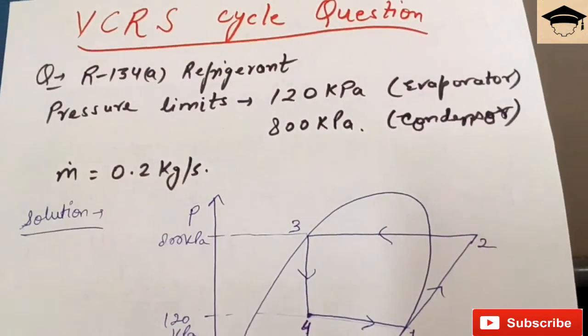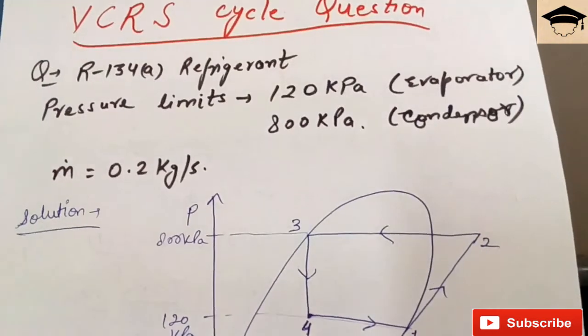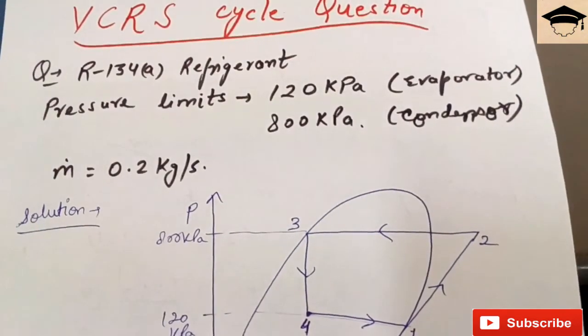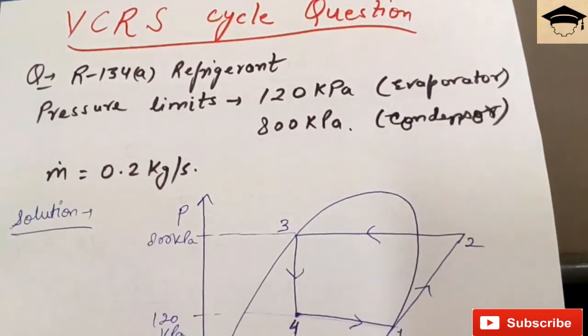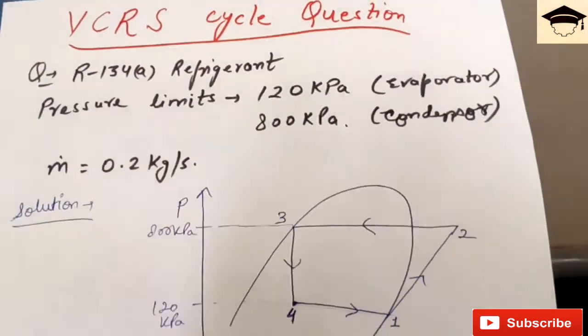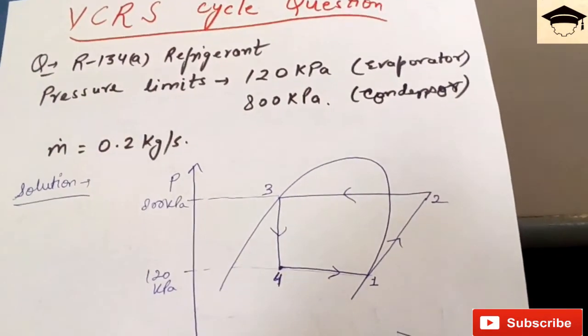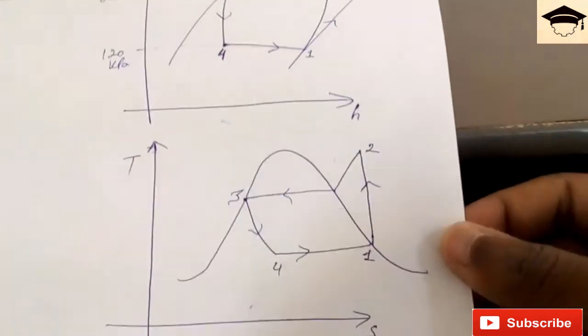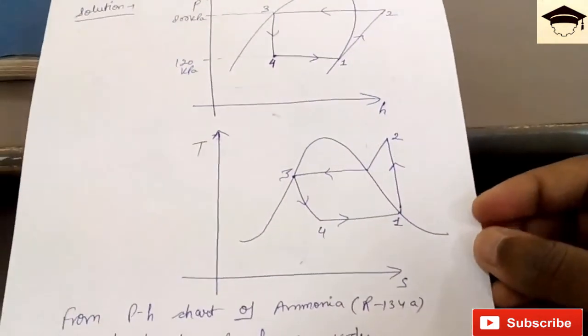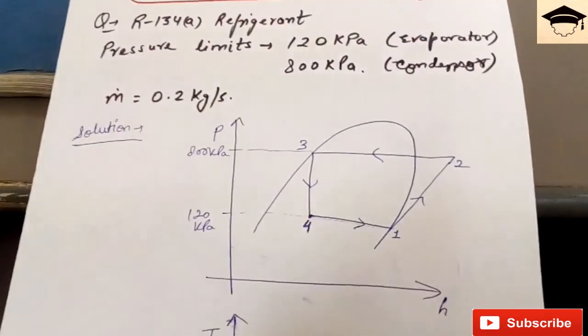It is a must before beginning with the problem that you should draw the pH diagram, that is pressure-enthalpy diagram, and TS diagram, that is temperature-entropy diagram. If you don't know how to draw these diagrams or you don't know the basic working of VCRS cycle, I have made a separate video with the link given in the description. You can easily go and watch that and then come here to understand the numerical.